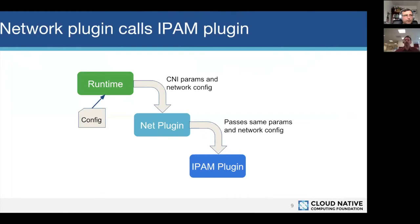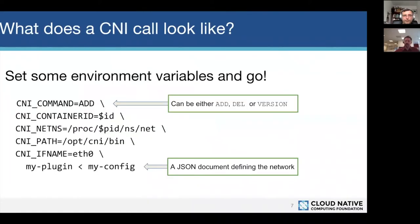The environment variables are really specific to every call to the plugin. As your system dynamically evolves, every time you add something — in Kubernetes terms you're going to do this once per pod, in Rocket terms once per container — you're going to set the command to add. When you tear one of those down, you set it to del. So that needs to be done dynamically by the thing that knows what's happening. The container ID needs to be dynamic. The network namespace, based on the process ID, needs to be dynamic.